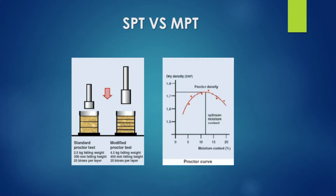We use 600 grams of soil sample. We add 1 percent of water, 2 percent of water, 3 percent of water, and so on. From the bulk density, we find out the dry density.